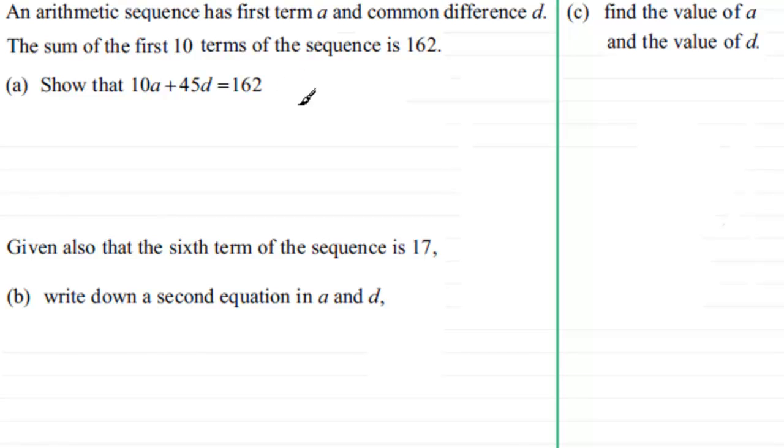Well to do something like this you've got to be familiar with various formulae that occur with arithmetic sequences. And one of them is the sum of the first N terms, often denoted by Sn. It's equal to the number of terms N over 2 all multiplied by twice the first term 2A plus N minus 1 times the common difference D.